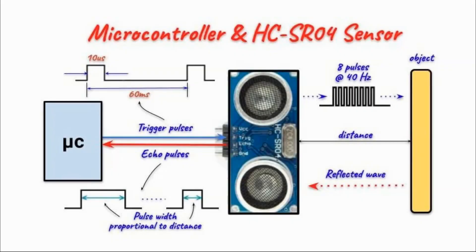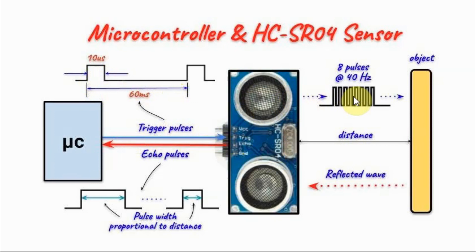The basic operation of the HC-SR04 sensor is as follows. The microcontroller will send a trigger pulse which has a pulse width of 10 microseconds and is repeated every 60 milliseconds. The sensor will receive the trigger pulse and respond by sending 8 pulses at 40 kHz ultrasonic waveform to the object.